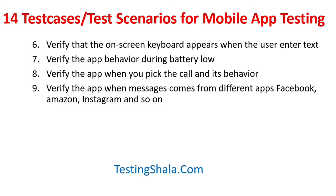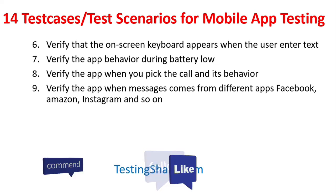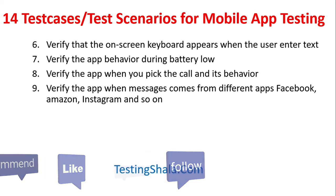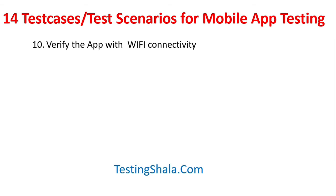The ninth important test scenario is: whenever you are operating on a mobile app and pop-up messages come in — such as Facebook, Amazon, Instagram, WhatsApp, or SMS messages — your mobile app should still work seamlessly. If it does not, that should be logged as a defect.